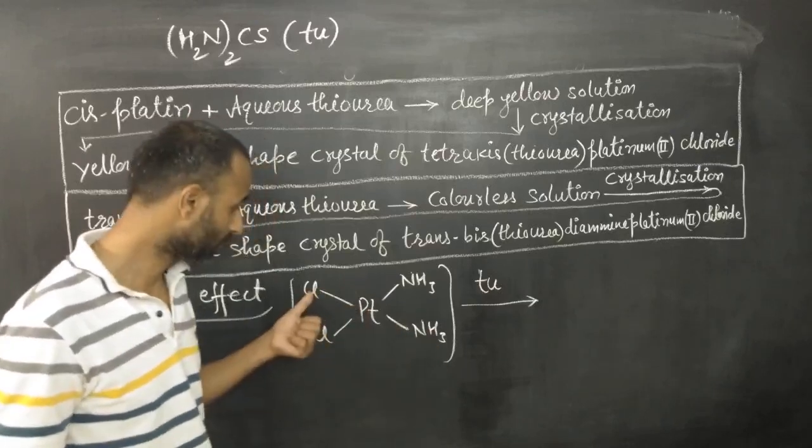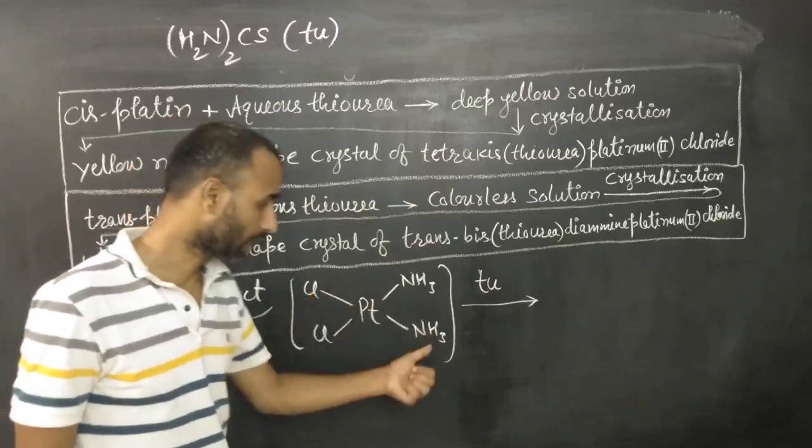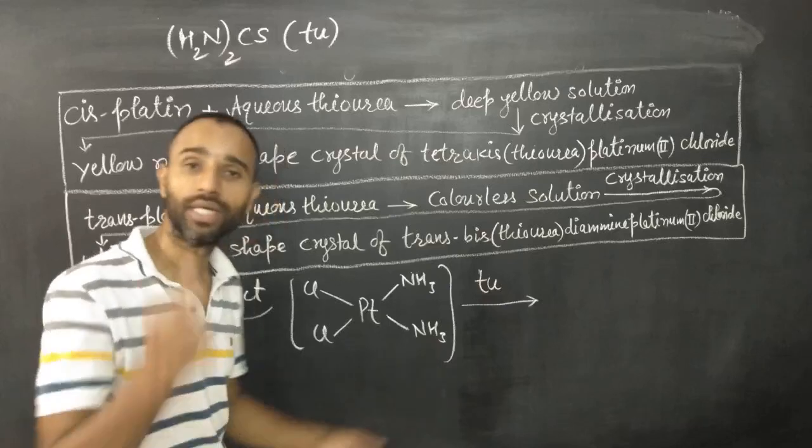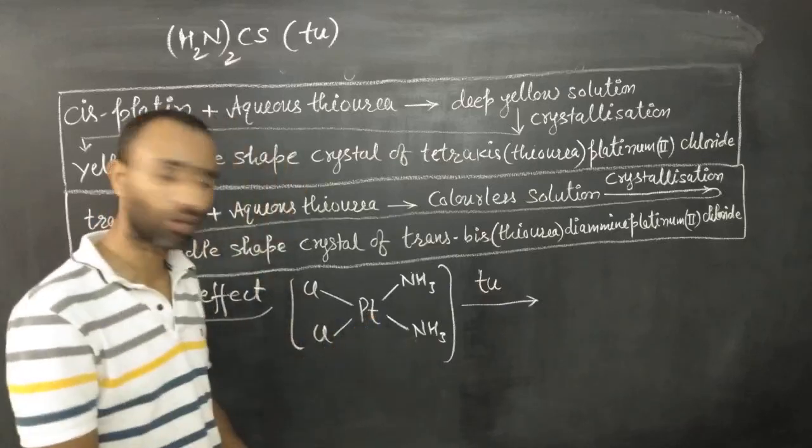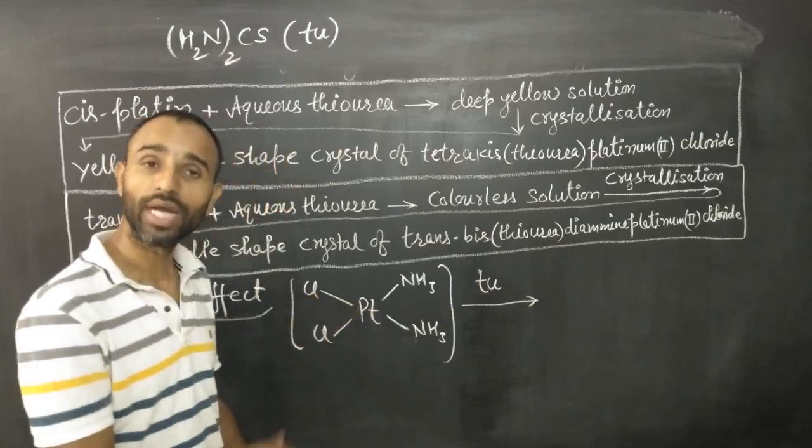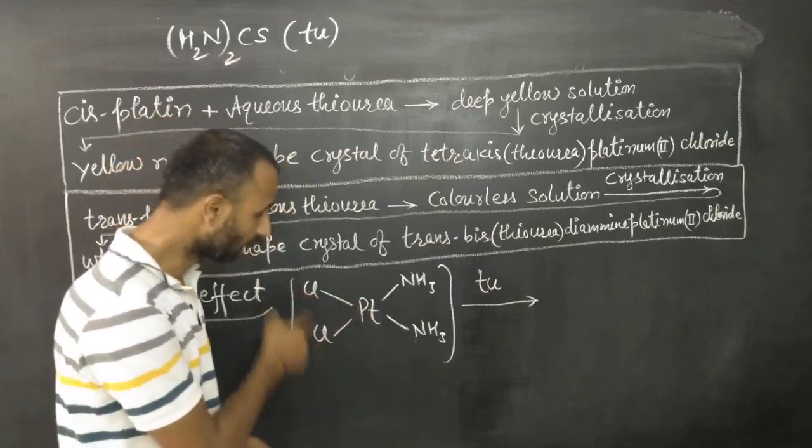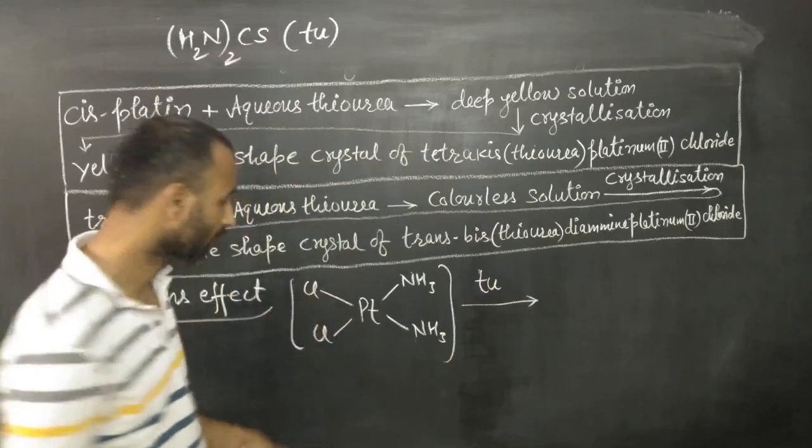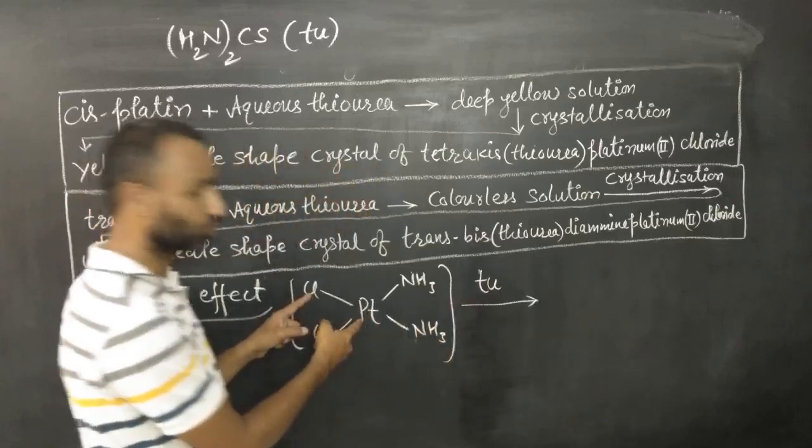Though trans effect of chlorine is more than ammonia, so obviously in place of chlorine, ammonia should be removed. But because Pt-N bond is stronger than Pt-Cl bond, and at the same time two Cl are cis to each other, that is why first Cl are removed.